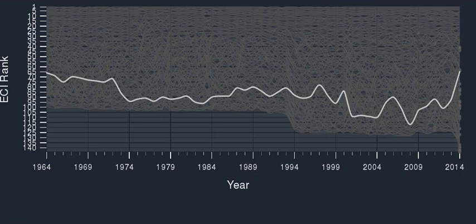The ECI was developed by César A. Hidalgo from the MIT Media Lab and Ricardo Hausmann from Harvard University's Kennedy School of Government. ECI data is available in the Observatory of Economic Complexity. The original formulation of the Economic Complexity Index was published in PNAS in 2009.